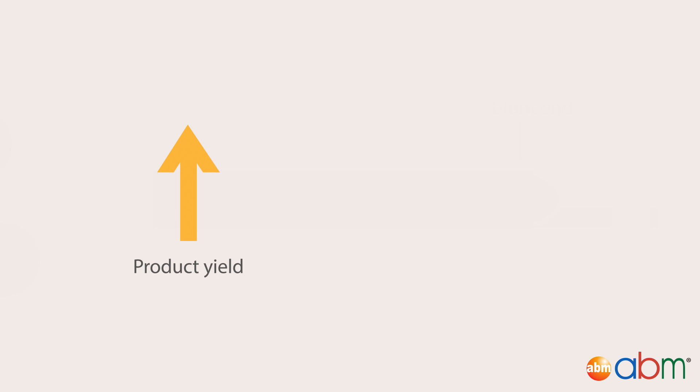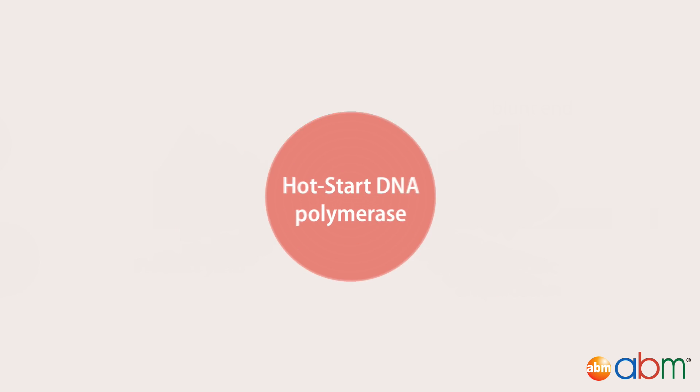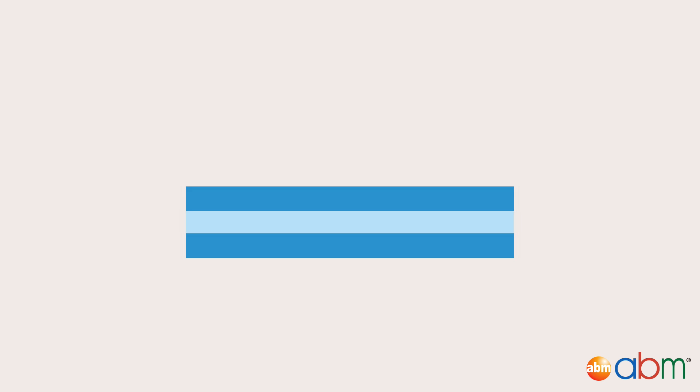If you wish to increase product yield through reducing nonspecific amplification, it is best to use Hot Start DNA polymerase. In Hot Start PCR, the DNA polymerase, usually TAC or PFU polymerase, is chemically modified or antibody-bound to remain inactive during lower annealing temperatures.